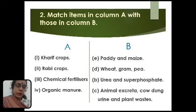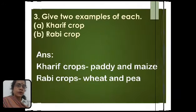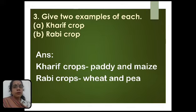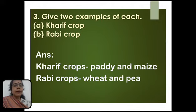Question number 3: give two examples of each — kharif crop and rabi crop. The examples of kharif crops are paddy and maize. Whereas the examples of rabi crops are wheat and pea.